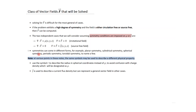The symmetries we look at include planar, cylindrical, spherical, periodic, and toroidal symmetry. Note that the symbol R is used for radius in cylindrical coordinates to avoid confusion with charge density rho. Also, J describes current flux density for the electromagnetic examples we'll examine, but can represent a general vector field in other cases.